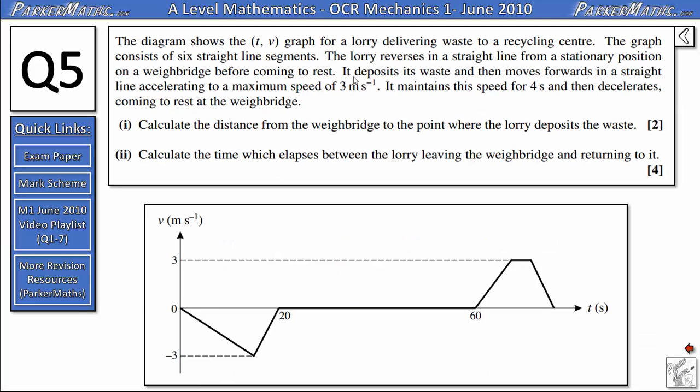The diagram shows the velocity time graph for a lorry delivering waste to a recycling centre. The graph consists of 6 straight line segments. The lorry reverses in a straight line from a stationary position on a weighbridge before coming to rest.